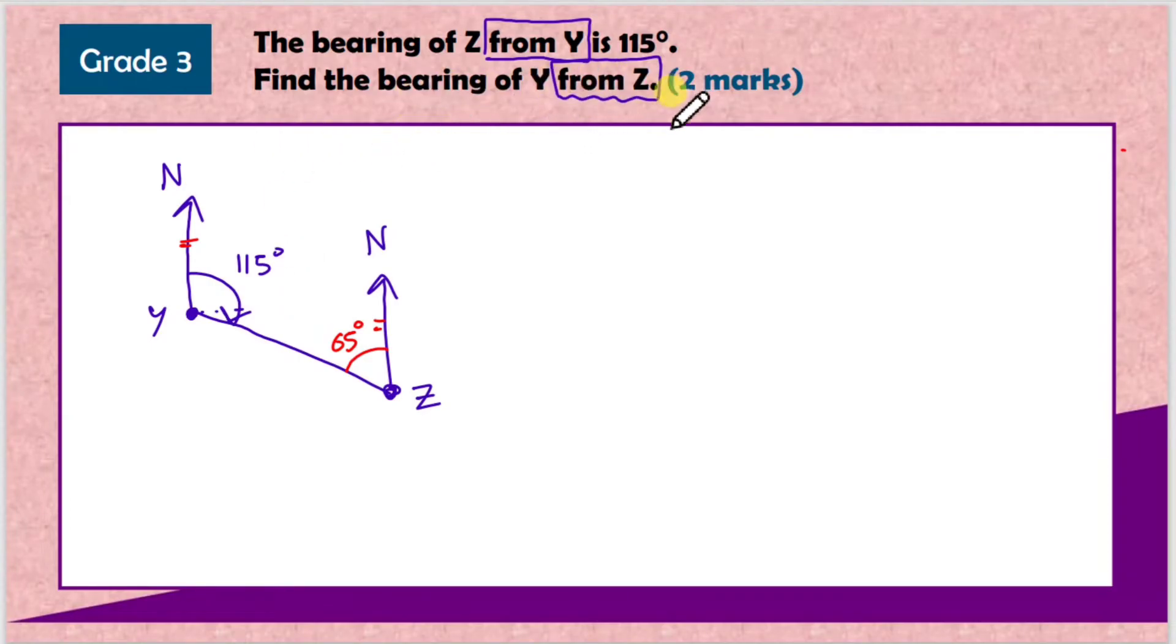So we know that angle is 65. Now to find the bearing of Y from Z, remember you start from Z and then you go clockwise. This might look weird - you're going to go clockwise all the way until you hit the line there. That is the big angle you want. If you ask yourself what do all angles around a point add up to, well it always adds up to 360 degrees. So all you want to do is 360 take away 65, and you'll find that this entire massive angle should be 295 degrees. That's the answer - that is the bearing of Y from Z. Even though this is a grade 3 question, it's very important that we know the basics.